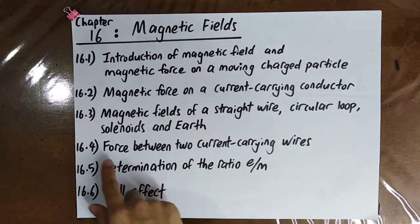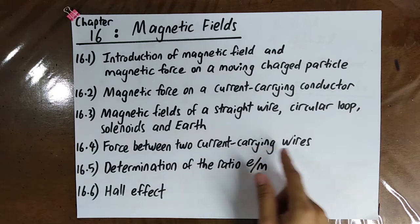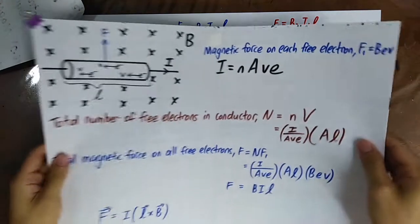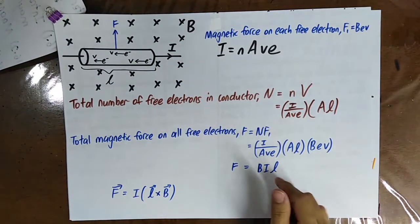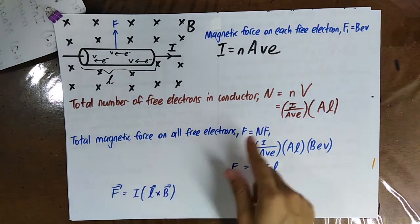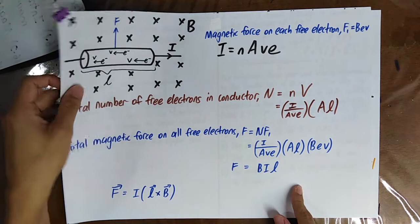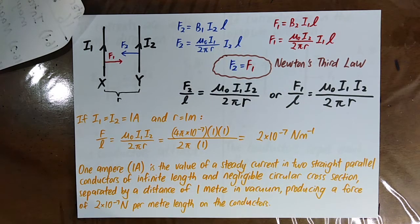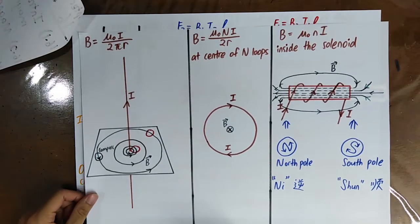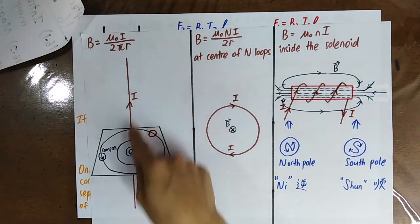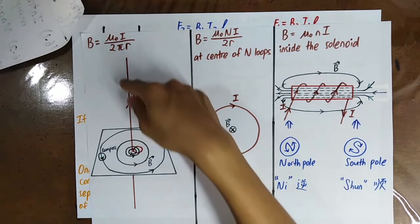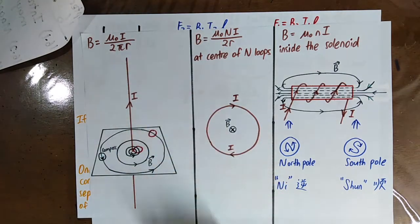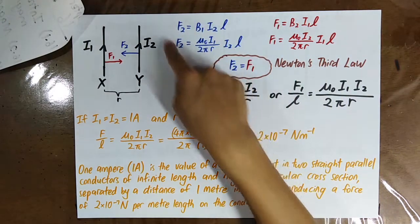In this video we'll be talking about the magnetic force between two current-carrying wires. Recall from video 16.2 that the magnetic force on a conductor is BIL. From the last video, 16.3, we learned that the magnetic flux density due to a straight current-carrying wire follows a specific formula, where the wire is assumed to be infinitely long.